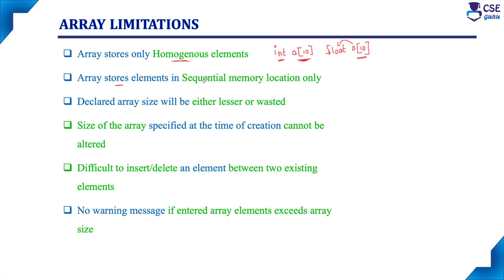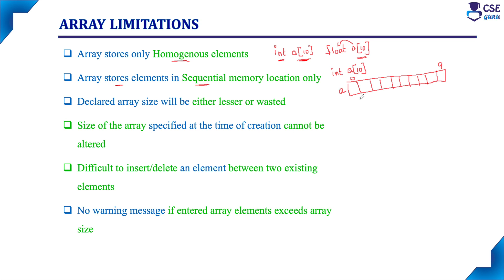Next, an array stores elements in sequential memory locations only, and this is a limitation. Suppose if you are declaring an array int a of 10, memory will automatically be allocated for 10 elements, starting from index 0 to n minus 1. It will check the memory wherever continuous 10 blocks are free. For integer that is 2 bytes, so wherever continuous 20 bytes of memory location are free, that memory will be allocated for array a of 10.